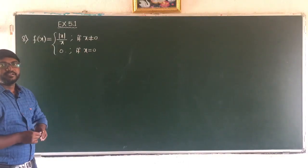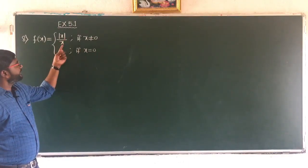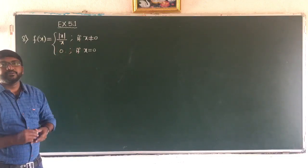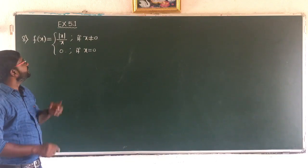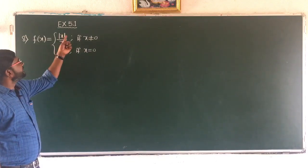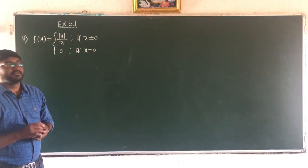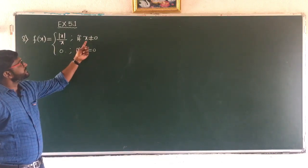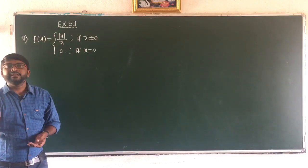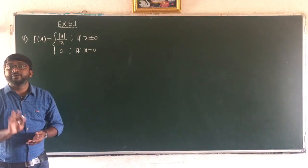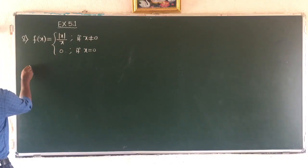The next question, 8(1): f of x equals mod(x) by x if x not equal to 0, and 0 if x equal to 0. Here in the numerator we have the modulus function, so we have to rewrite it. The condition is x not equal to 0, meaning x can be less than 0 or greater than 0, but not equal to 0.